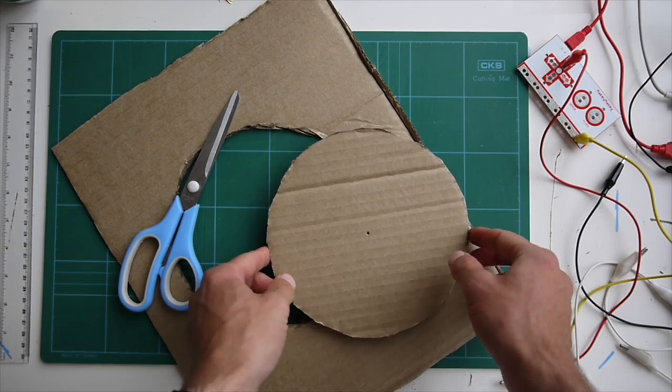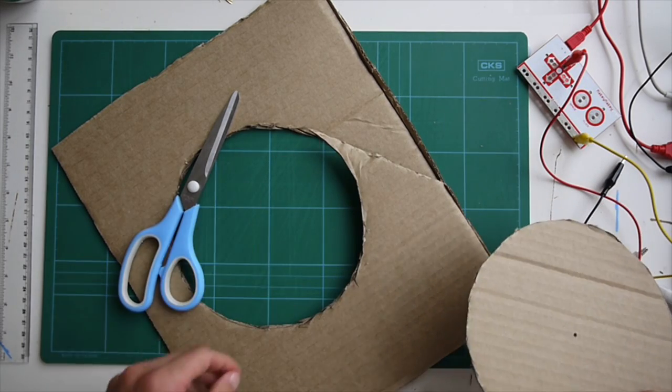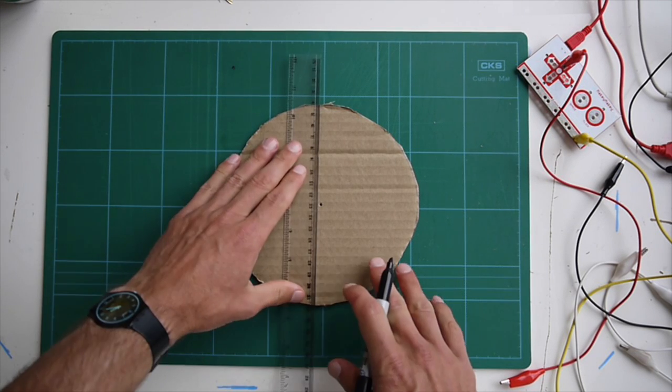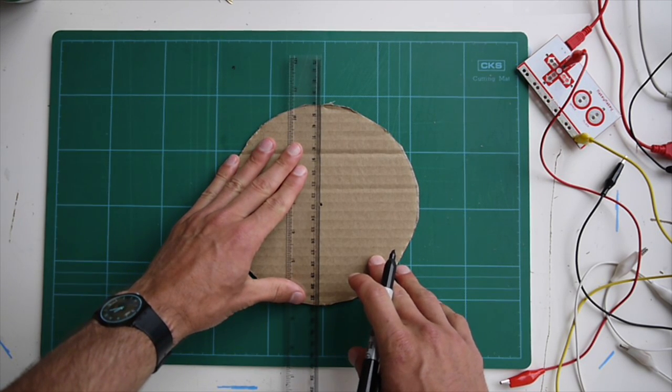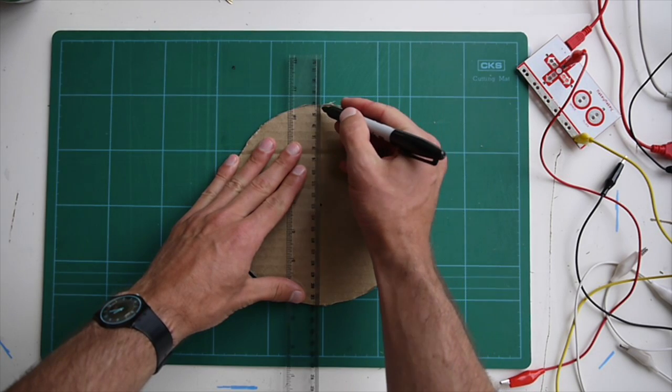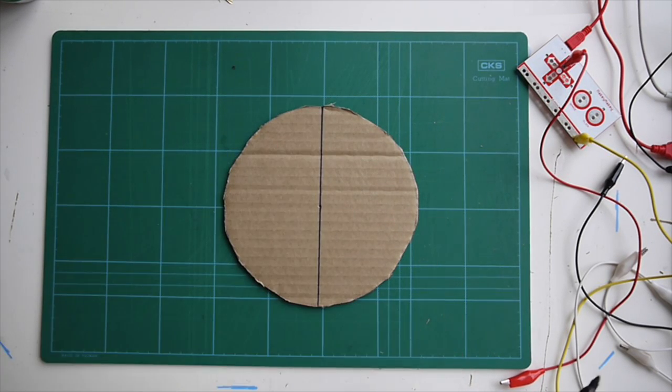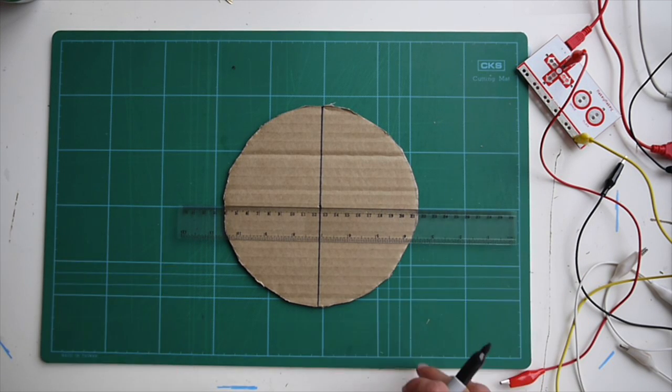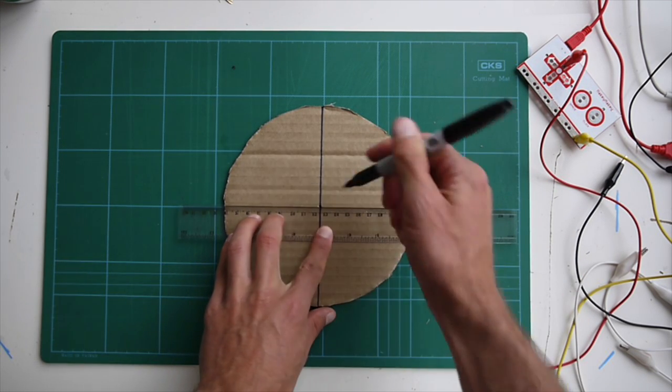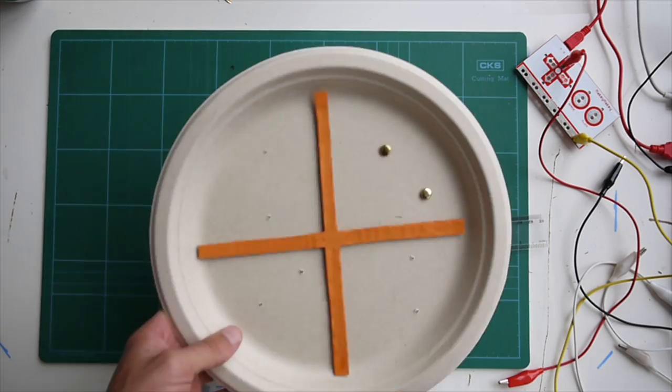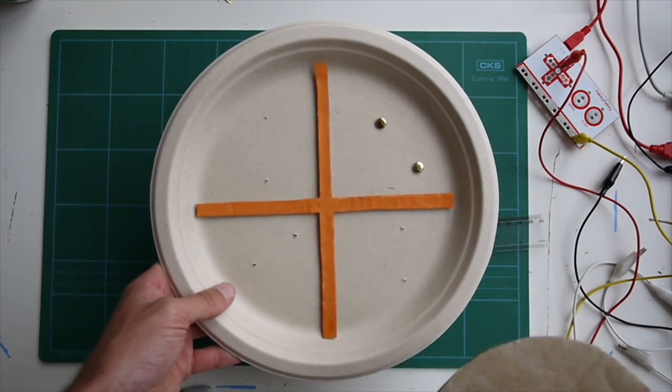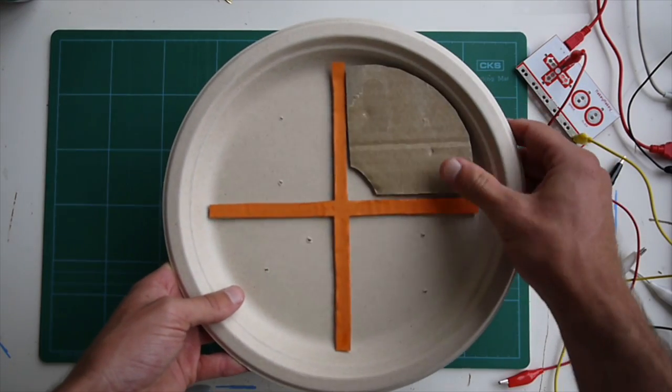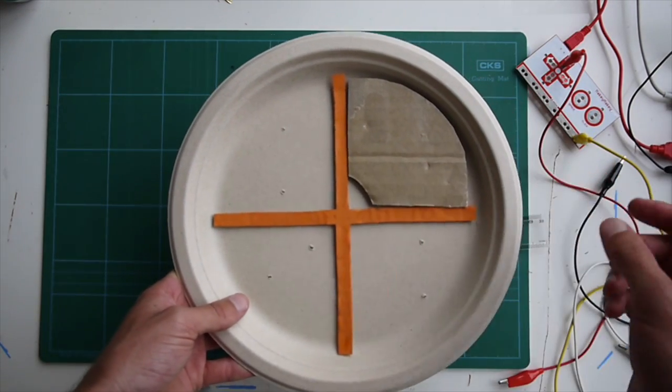So I've just gone ahead and cut out that circle from the cardboard. Next thing I'm going to do is get a ruler and just draw a diameter across the center of the circle. So I'm just going to eyeball this one but you could also use a protractor to be more precise. This cross is going to form this frame on our clock and inside each of our quarters of our frame we will have a puzzle piece and this is the piece that we'll use with the Makey Makey.